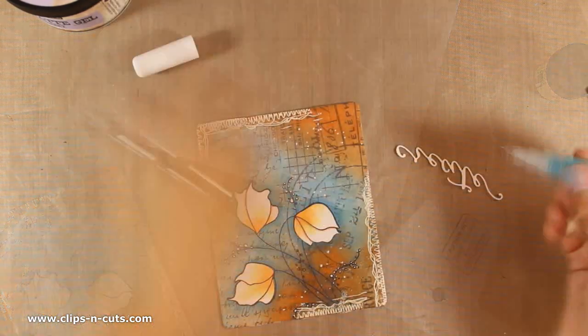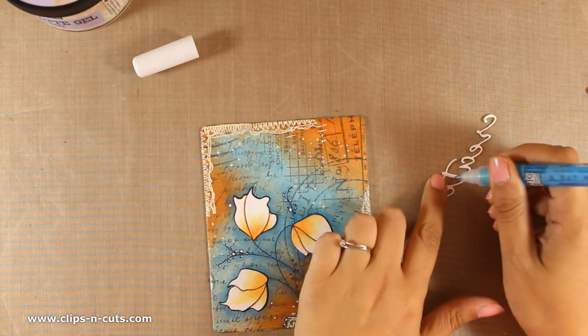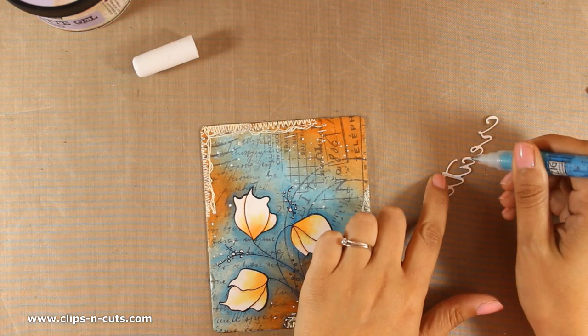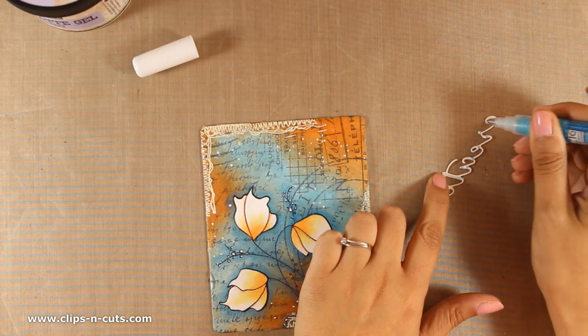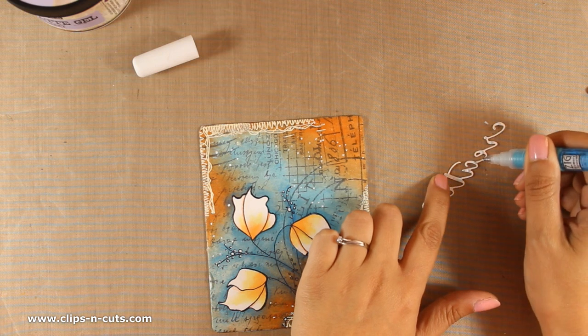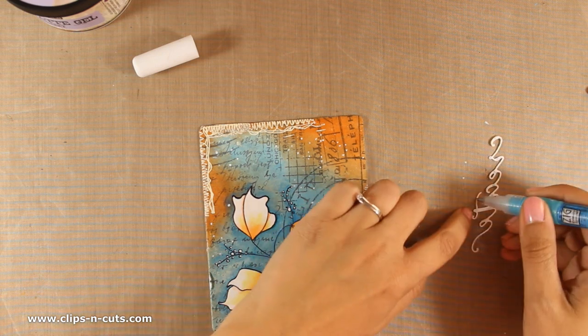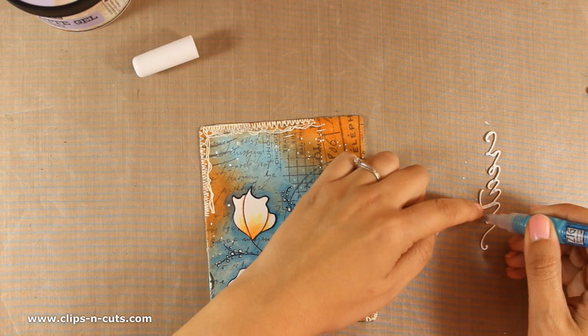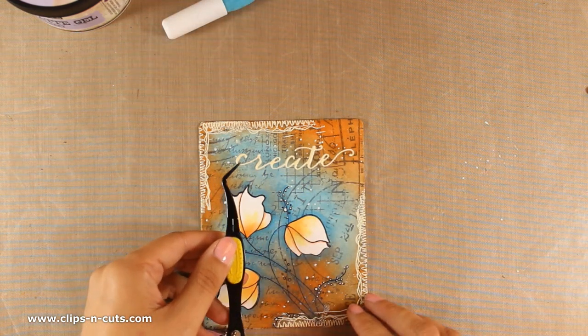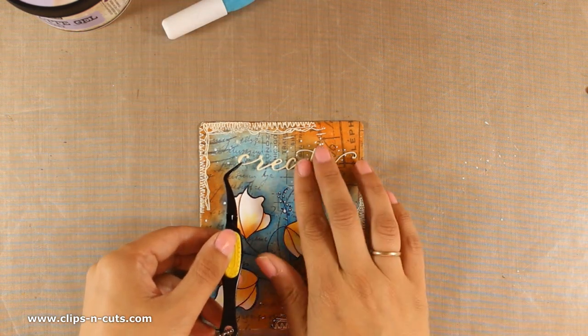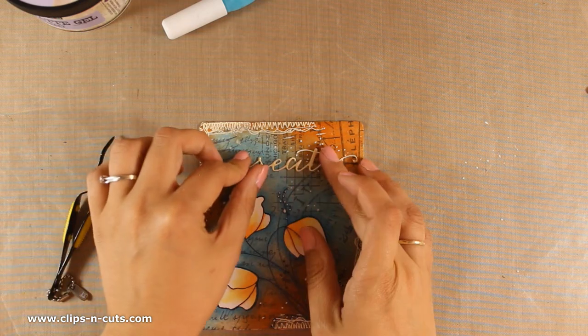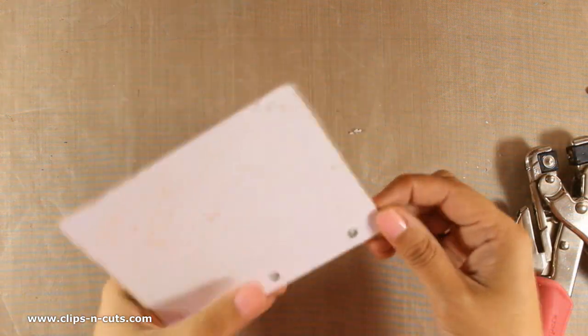After heat setting the die cut, I end up with a nice and puffy looking word which really compliments the design. I am just using my glue pen at the back to add dots of glue all over, just to make sure that it is going to stick nicely down, and my layout is pretty much finished.